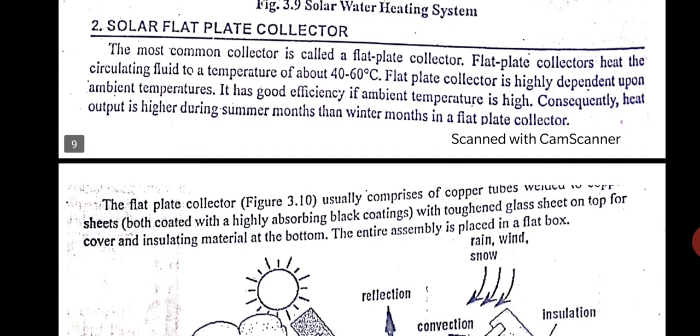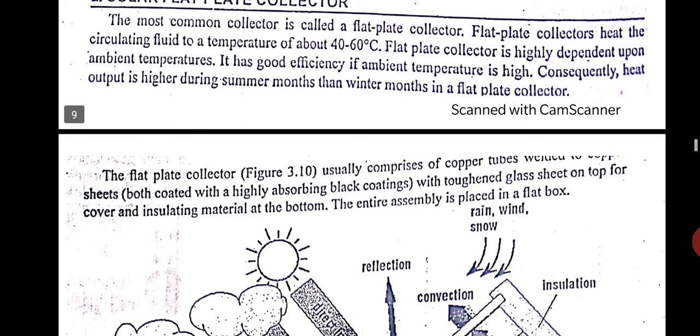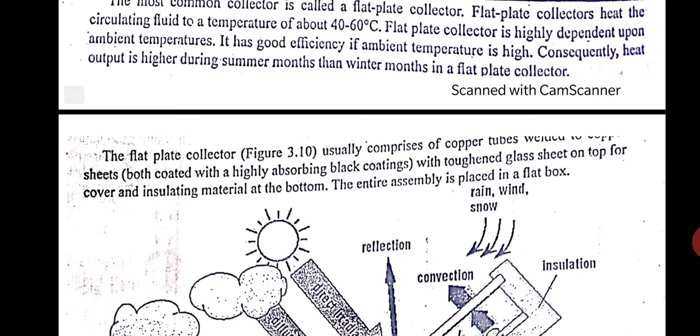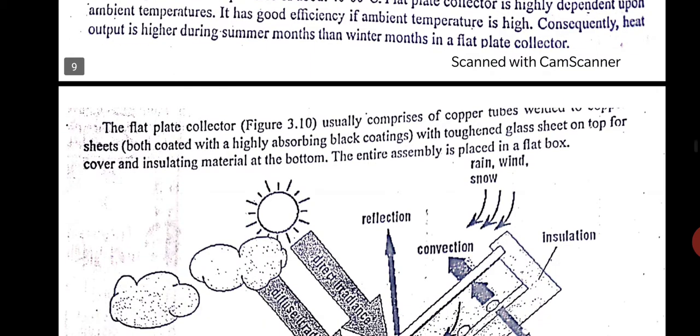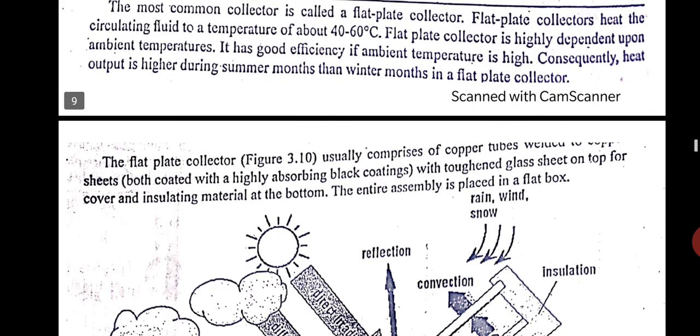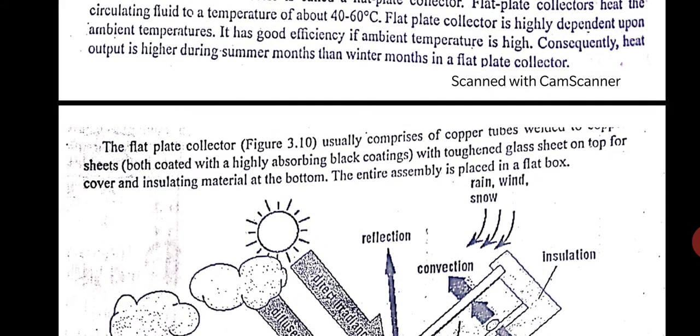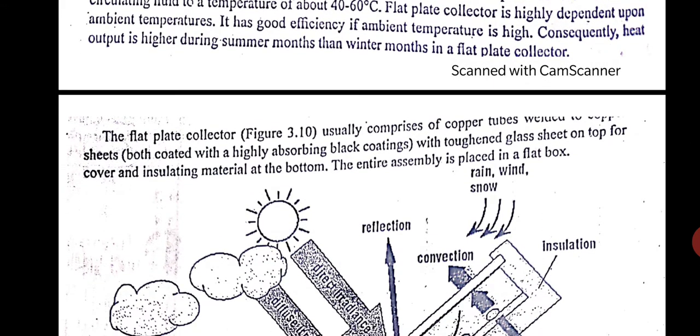So the solar water flat plate collector can reach, you can get water of 40 to 60 degrees centigrade. It depends highly on the ambient temperature. It has good efficiency if the ambient temperature, means atmospheric air temperature, is high. In summer months it is better than in the winter months because in winter the temperature will fall down.